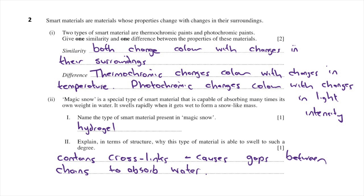If you said it contains crosslinks, and these cause gaps between the chains which allow it to absorb water, that gets you a mark for that as well. So it's a two-mark question: one mark for hydrogel, and one mark for the idea that it contains crosslinks which cause gaps between chains to absorb water.